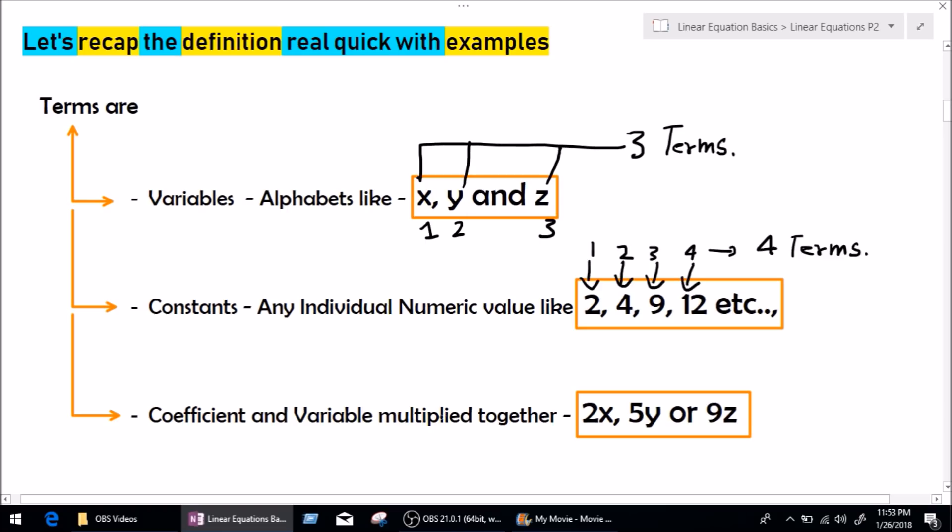As we move down to the coefficient and the variable multiplied together, which gives out a term, so 2x and 5y and 9z. So, this is term 1, this is term 2, and this is term 3, which gives out a total of three terms.